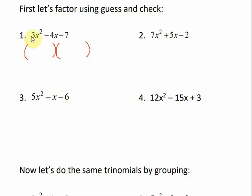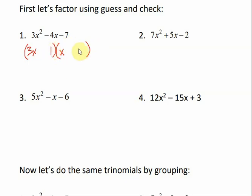This first example is easier because both outer terms are prime numbers. The only factors of 3 are 3 and 1, and the only factors of 7 are 7 and 1. So for 3x², we multiply 3x and x. For 7, we use 1 and 7. The sign in the middle tells us if our signs will be the same or different — this one says different, so we'll be subtracting. I'm going to do my little smiley face check to see if everything is in the right order.